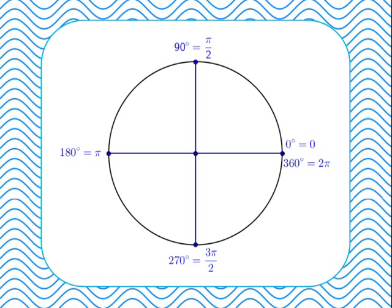We could keep going — for example, 5π/2 radians is equivalent to 450 degrees, which is one and a quarter laps of the circle. We could also talk about negative angles, such as negative π/2 radians, which means going clockwise from the positive x-axis. Negative π/2 radians would be in the same position as positive 3π/2 radians.